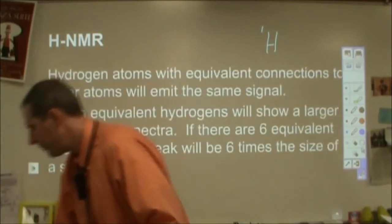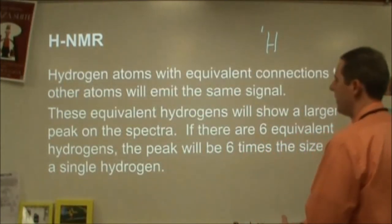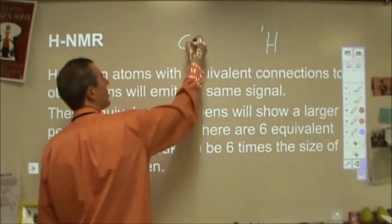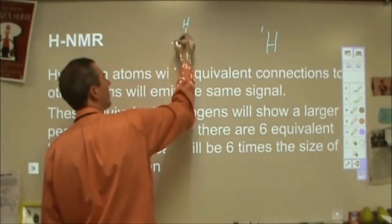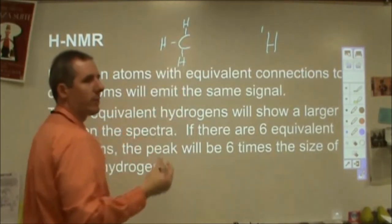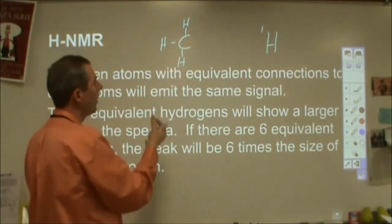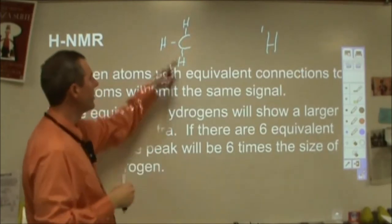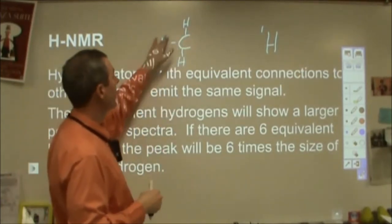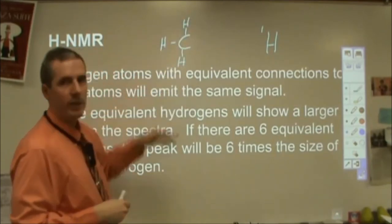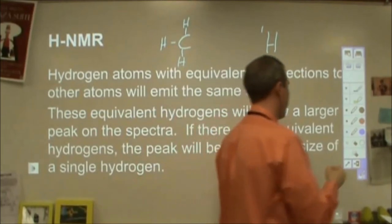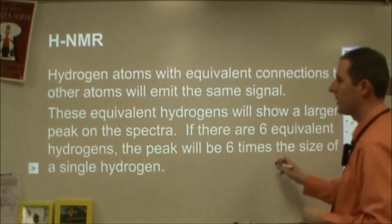And then the other big thing that's kind of new is that hydrogen atoms that are in a compound that are equivalent to each other will emit the same signal. So if I have a methyl group, all three of those hydrogen atoms are all equivalent to each other and they will all emit the same signal. I won't be able to distinguish this from this from this. However, I will get three times the strongest signal from this as I would from something where there's only one hydrogen.